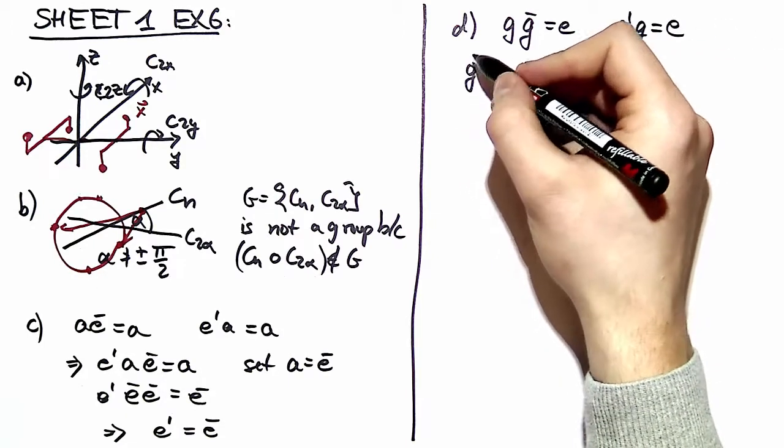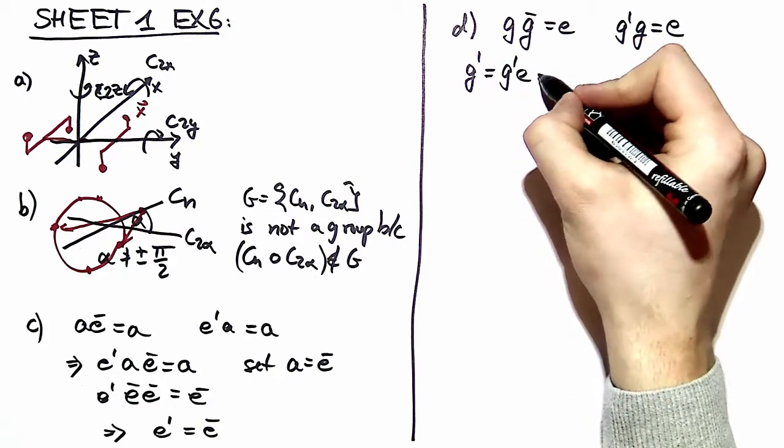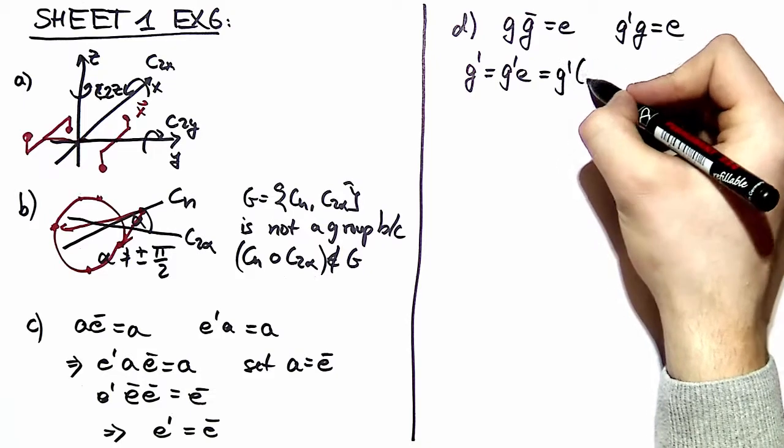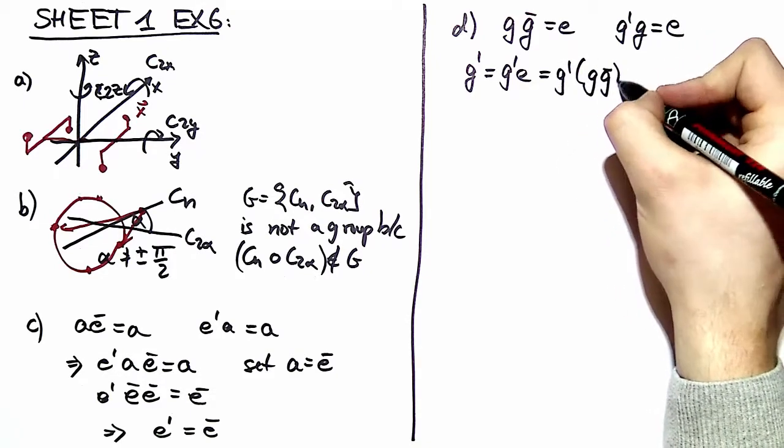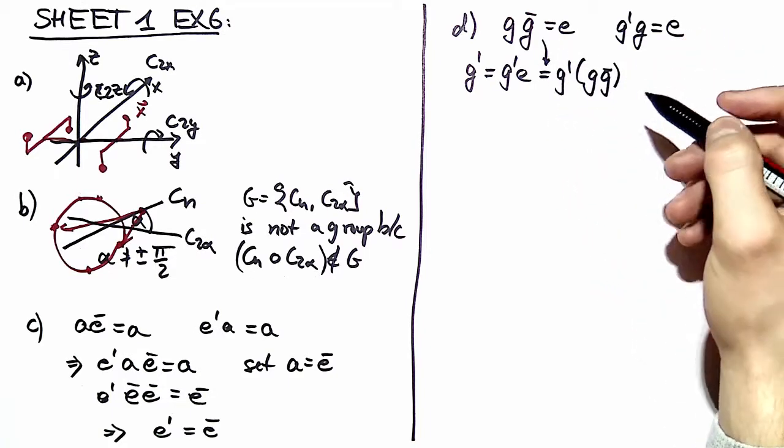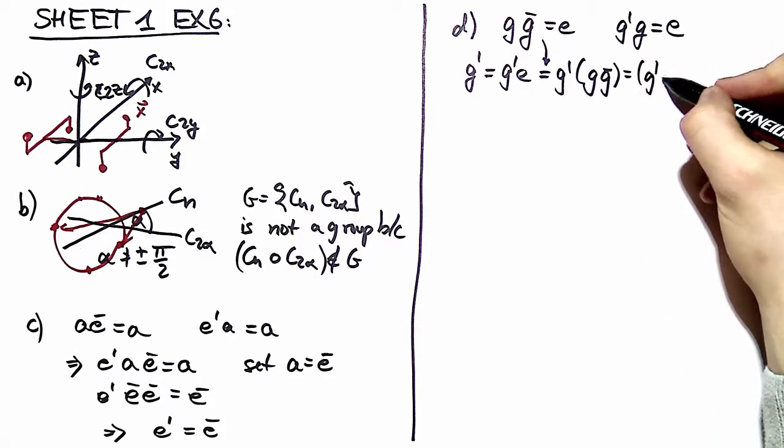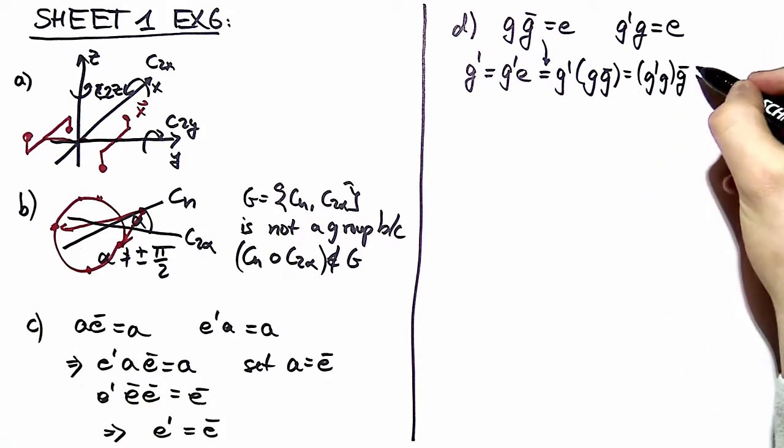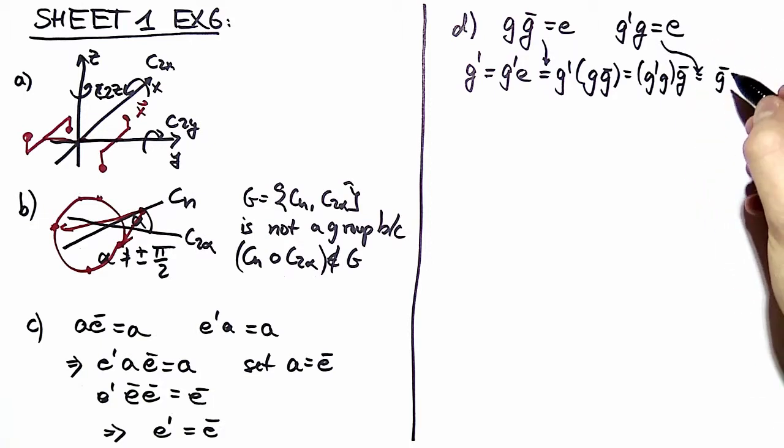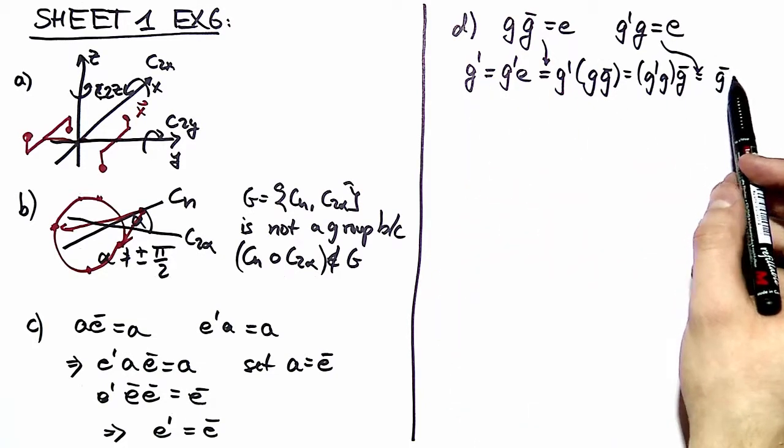This proof can be done with a single line. We have g prime and we insert an identity here. This identity can be written as g g bar. Now we use the associativity to regroup our elements, then we use this definition again to say this is nothing else than g bar, and we've shown that the left identity is equal to the right identity.